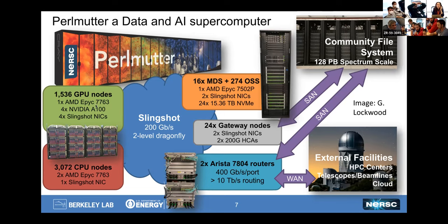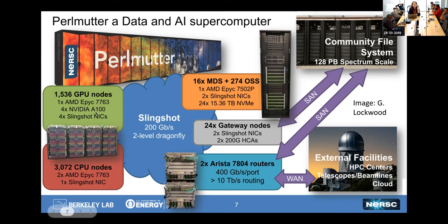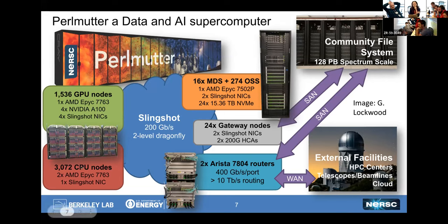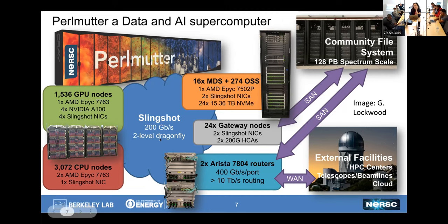Perlmutter's compute power is centered in GPU nodes that are NVIDIA A100 accelerated, which is a great resource for deep learning. There's also a large number of CPU nodes, which can be used for more traditional analytics of experiment workflows or things that are difficult or impractical to port to GPU. There's also significant other infrastructure important to data and analytics, such as the all-flash file system and fast connections out to external facilities and to larger file systems.